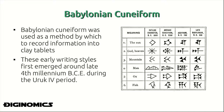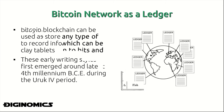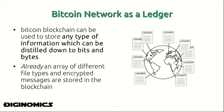If we go back further in history, we also find that Babylonian cuneiform is a prime example of a ledger technology that was used to store and distribute information in a more effective manner. Babylonian cuneiform was used as a method by which to record information into clay tablets, and these early writing styles first emerged around the late fourth millennium.